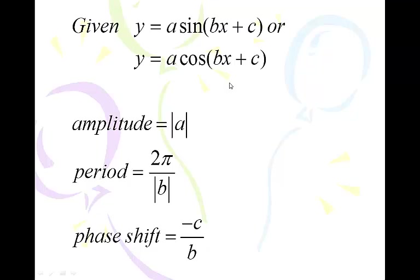The phase shift — that's where we're moving it right or left — is negative c over b. Given that b is positive, if c is positive, you're actually moving the graph left; if c is negative, you're moving it right. That formula, negative c over b, takes that confusion out of it. Inside the parentheses, it does the opposite of what it initially appears — it lies. Out here, a does exactly what you think: if there's a 2 out here, it'll make it twice as tall; a half makes it half the size. Outside the parentheses it tells the truth; inside the parentheses, it lies like a dog.